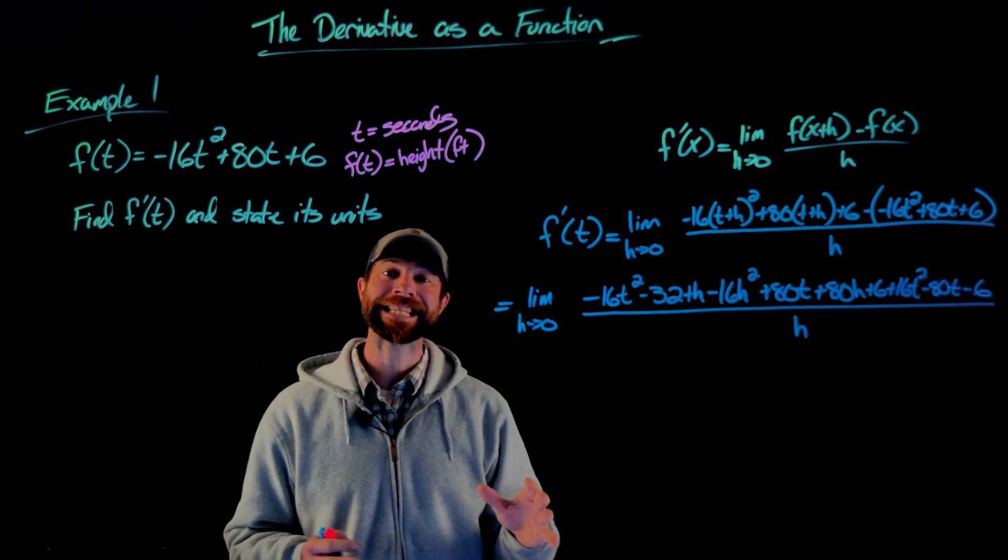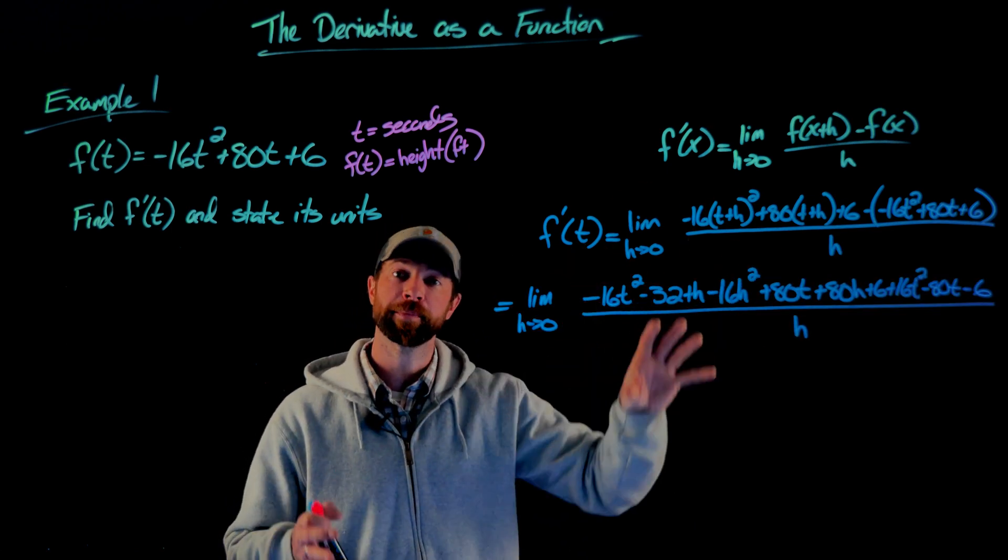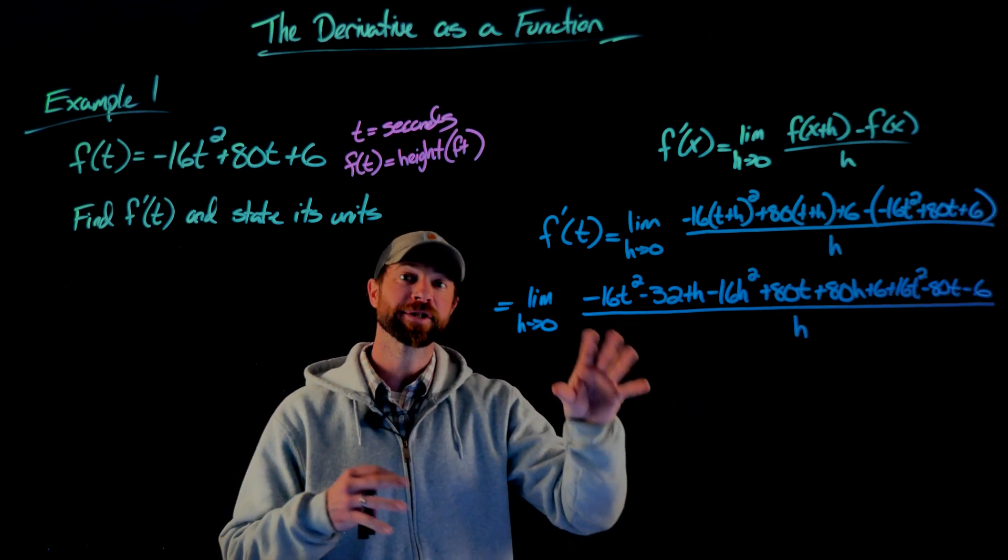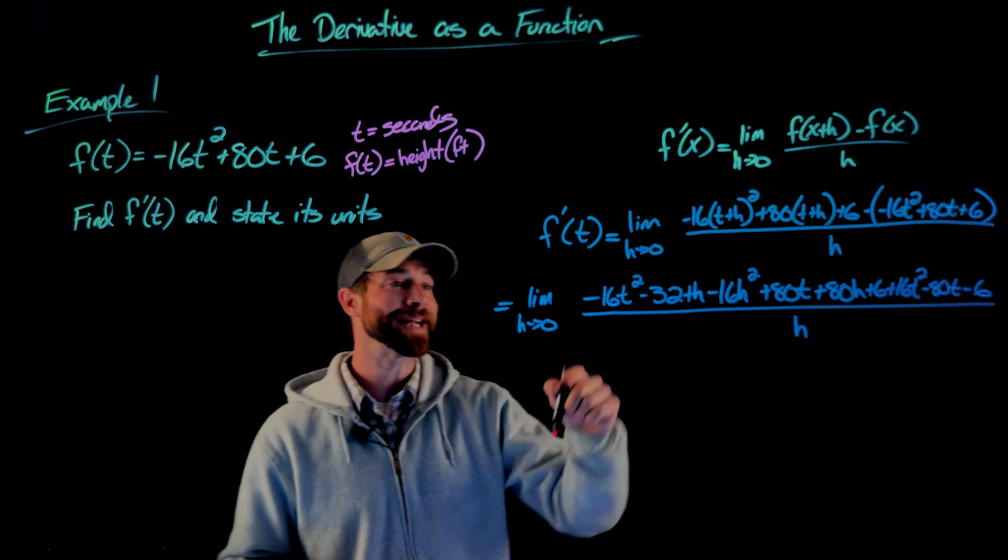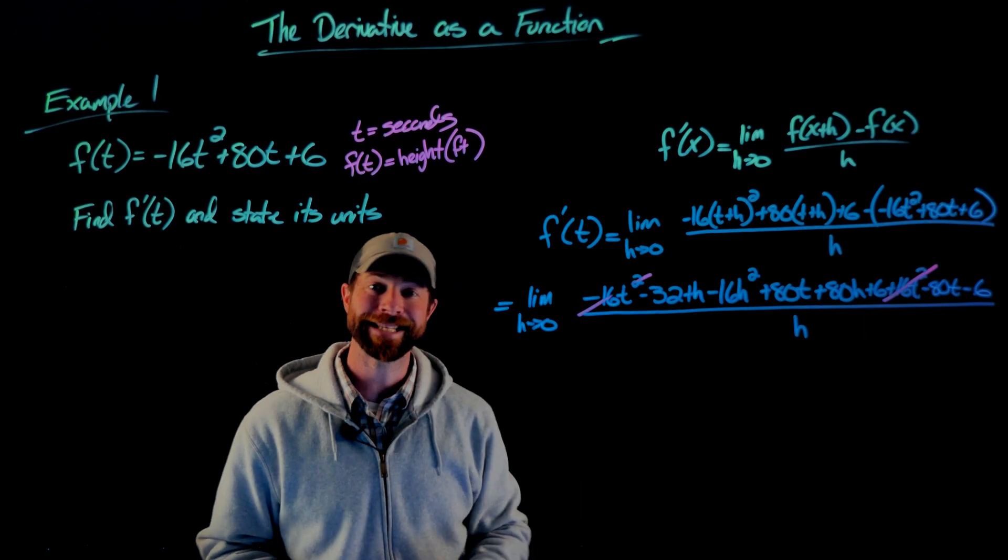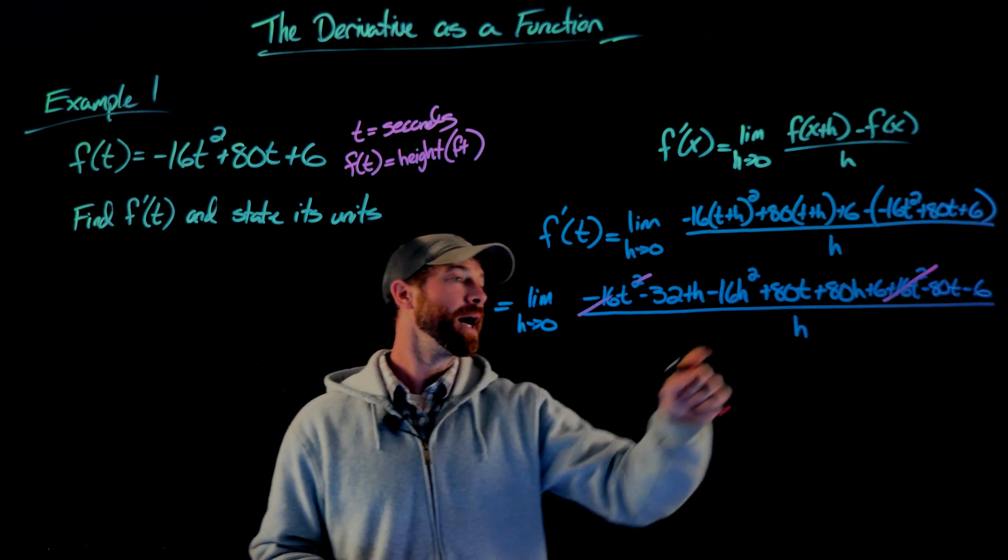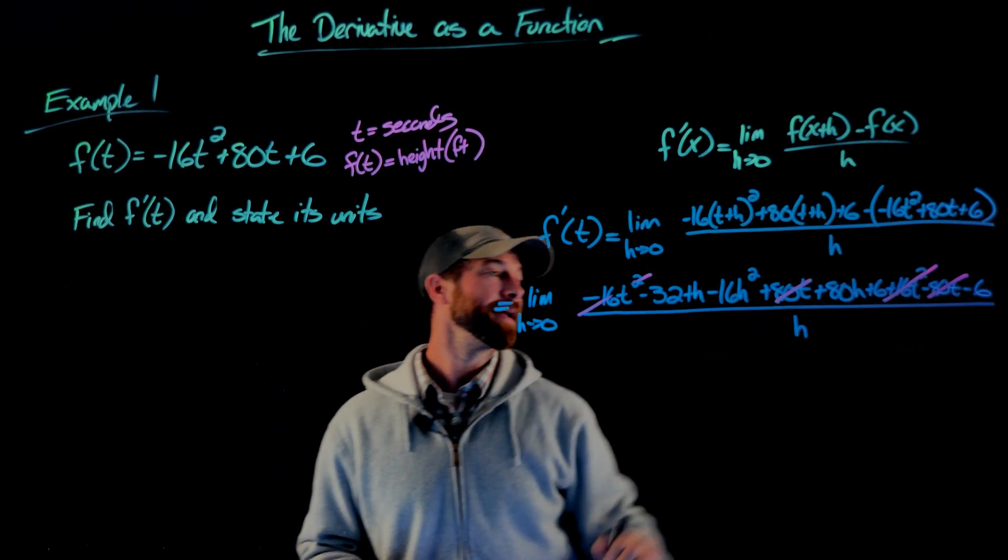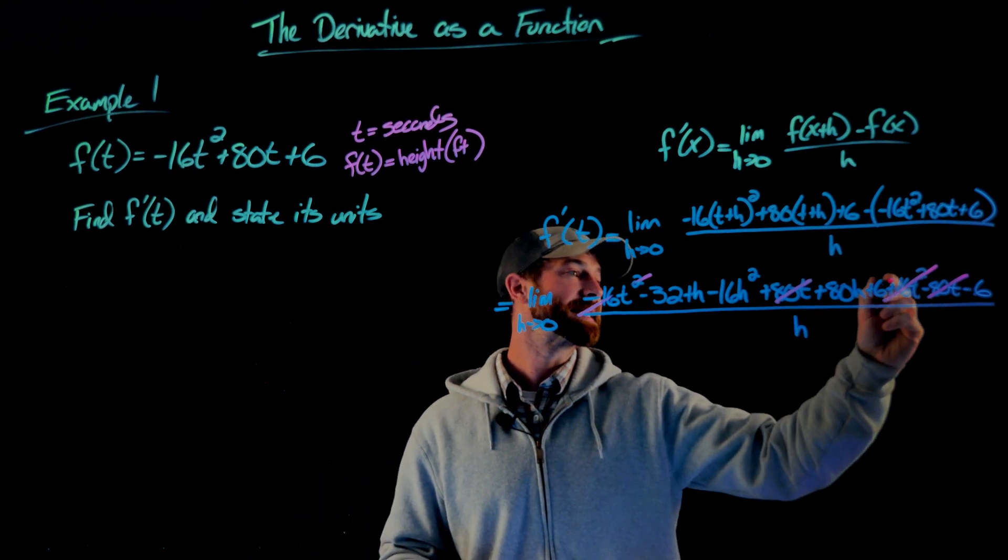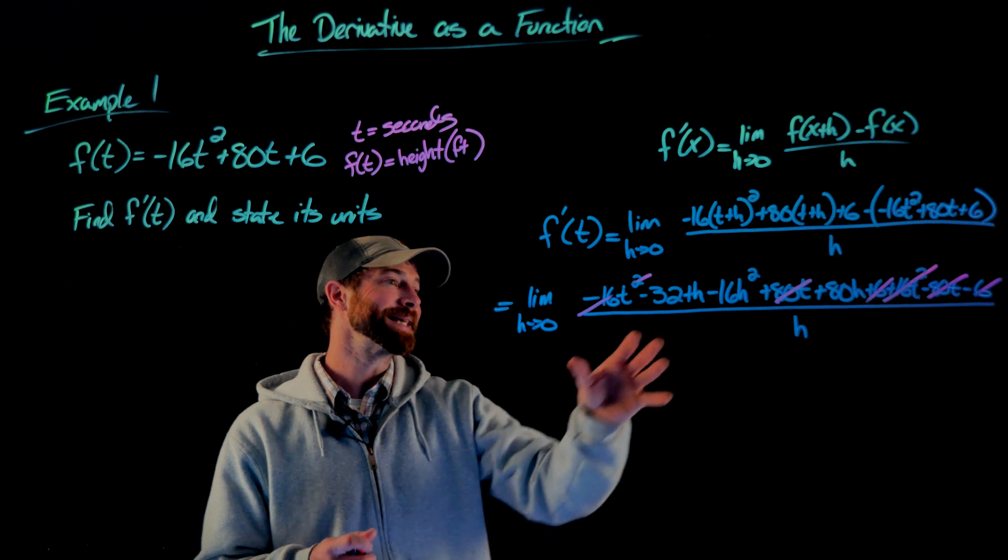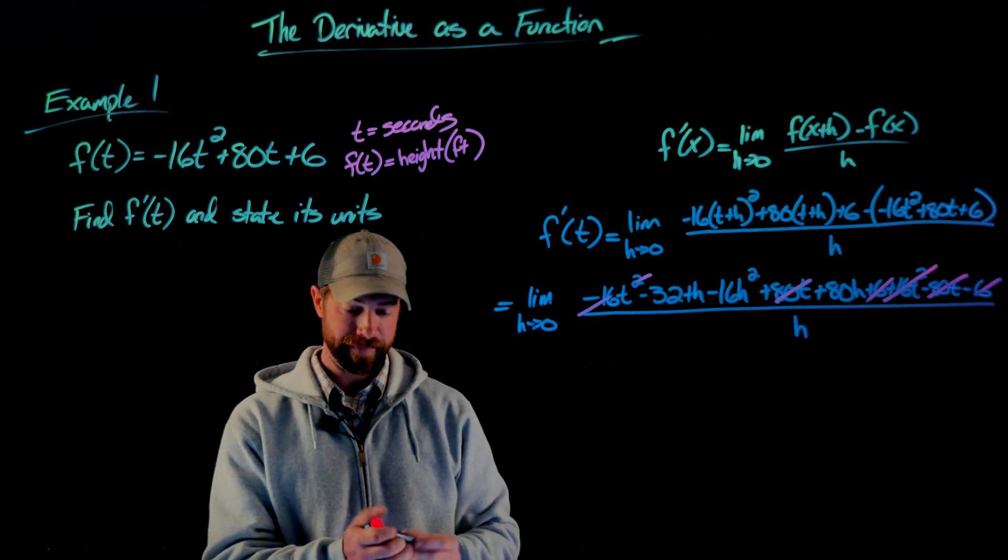Now our job is to clean things up after we've distributed, multiplied everything through. Let's combine like terms. We'll often have these terms that cancel in the numerator. For instance, this negative 16t squared and the positive 16t squared cancel each other out. We have the plus 80t minus 80t, and finally the plus 6 and the minus 6 all cancel each other out. Let's now rewrite this without those terms.